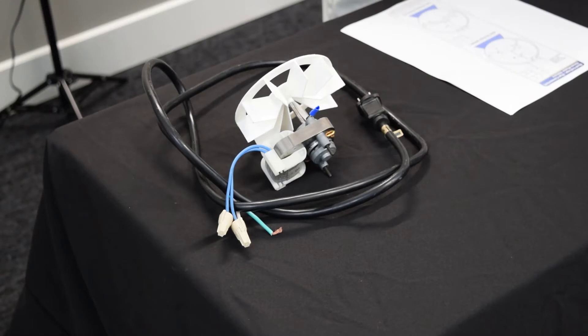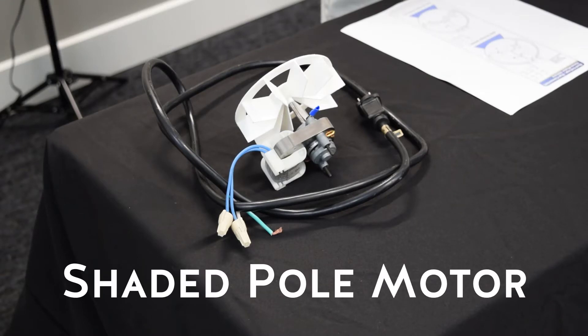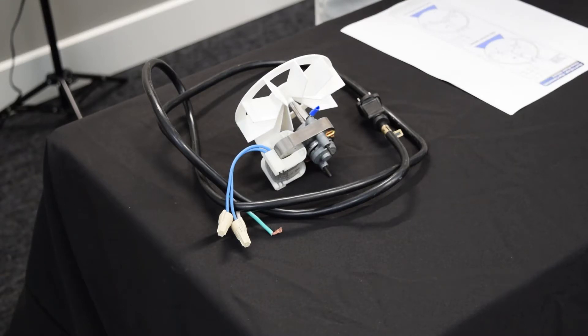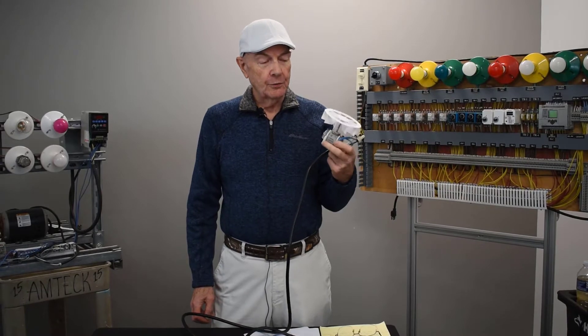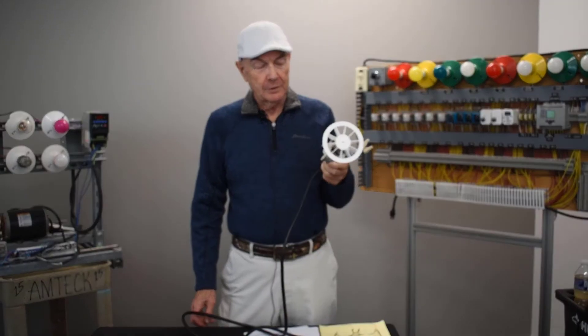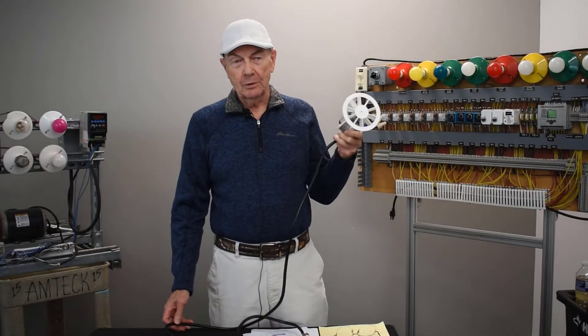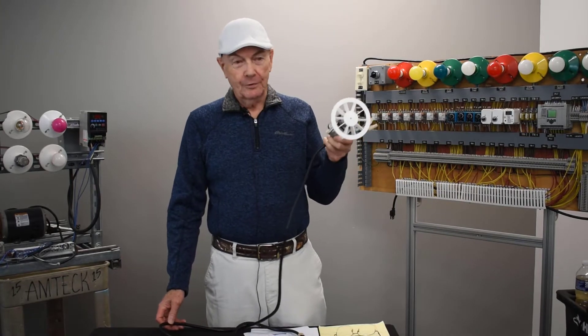What we got here is a shaded pole motor and we're going to be demonstrating how it operates and what they're used for. The shaded pole motor is usually used for fan motors or something where the torque is not very high, because the torque in this motor is very low.